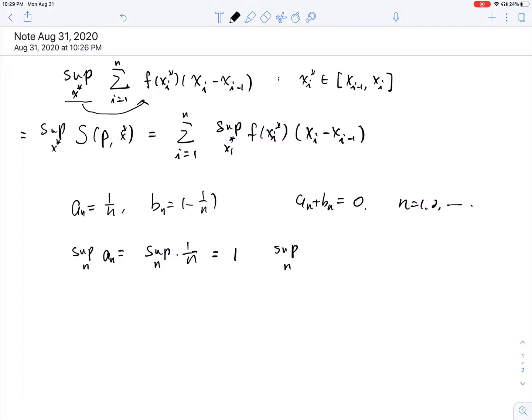And if we look at supremum over n, what is bn? And that's going to be supremum over n, negative 1/n. But we see the bigger the n is, the larger the number is. So this one actually is equal to 0, because it's negative.